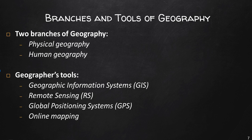Human geography is concerned with the distribution and networks of people and cultures on the Earth's surface. It focuses on the built environment and how humans create, view, manage, and influence space. A human geographer might investigate the local, regional, and global impacts of rising economic powers such as China and India. Human geographers also study how people use and alter their environments — for example, when people allow their animals to overgraze a region, the soil erodes and grassland is transformed into desert.